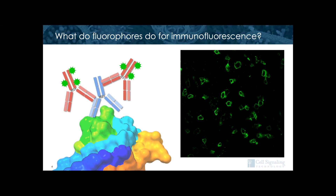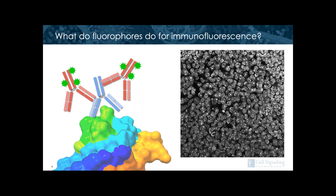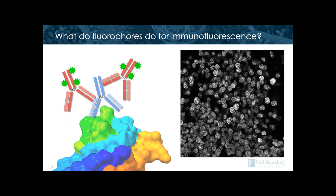The image I'm showing you here has been pseudocolored green. However, the camera or photomultiplier tubes — because this is a confocal image — originally captured it in grayscale. By capturing a number of these grayscale channels, I'm able to make a composite image where I've overlaid the channels that I image.